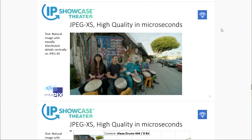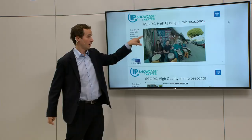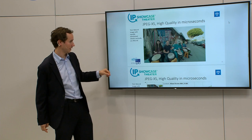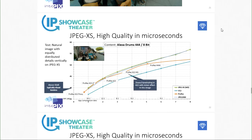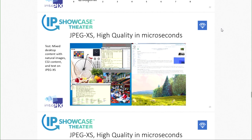Everything shown here is with microsecond latency — it's not a codec like the others. We get the best quality with the lowest latency. This example from a white paper done with Fraunhofer shows results on natural images. The JPEG XS green curve delivers the best PSNR compared to other technologies, with line-based coding outperforming ProRes, VC-2, and JPEG 2000.